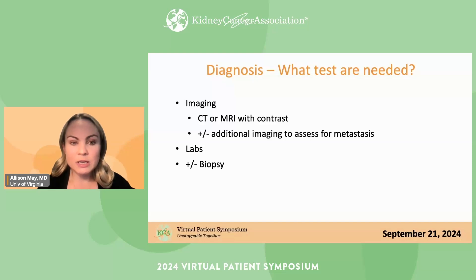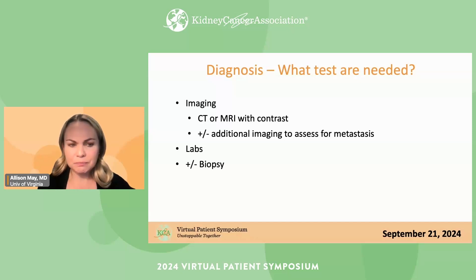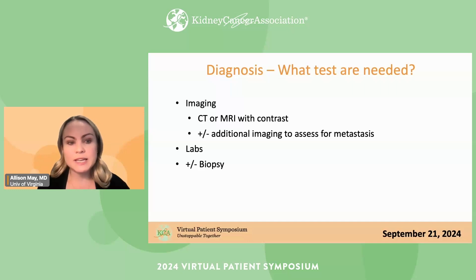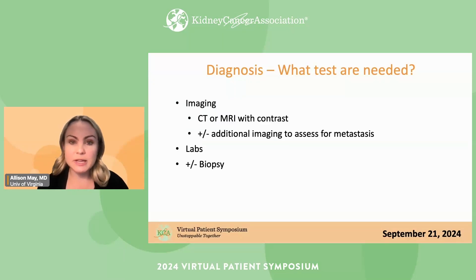Sometimes your doctor may also order other scans — like of your chest — to make sure there's no disease that has spread, or scans of the brain or bones depending on risk. We'll also get labs, especially to assess your baseline kidney function. Sometimes we order a biopsy, though this isn't typical. Kidney cancer is one of the unique tumors that we don't always biopsy, because our imaging is so good that we can usually tell what your tumor looks like and what we need to do just based on imaging. Occasionally there are reasons to get a biopsy if it would change management, and those are very safe and accurate.